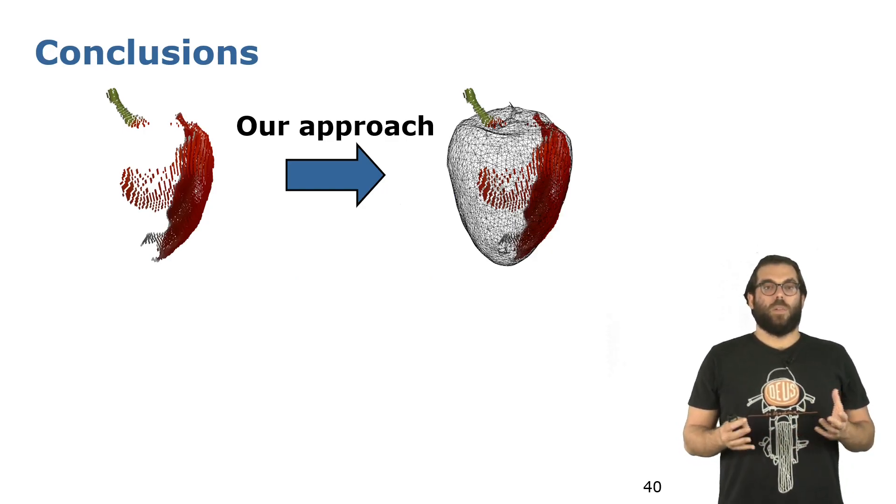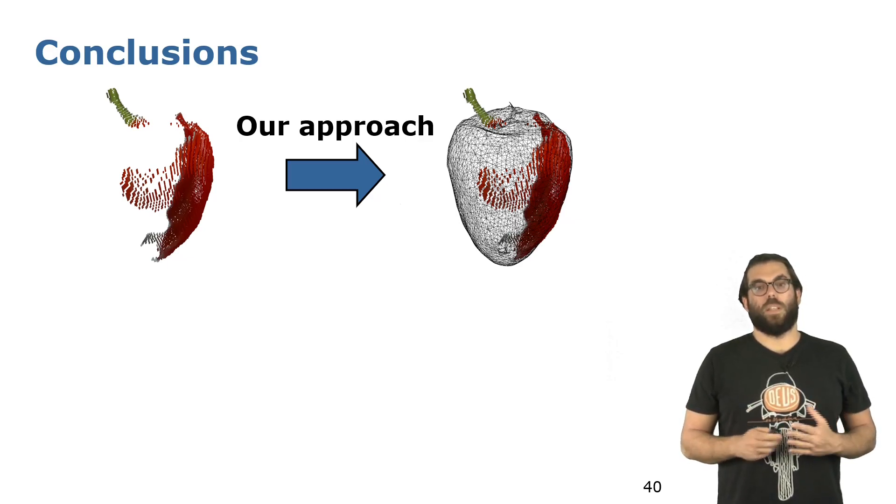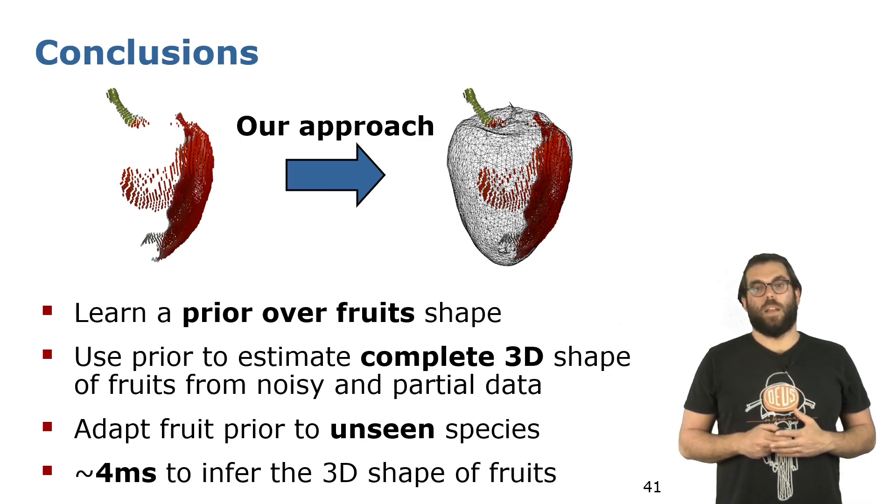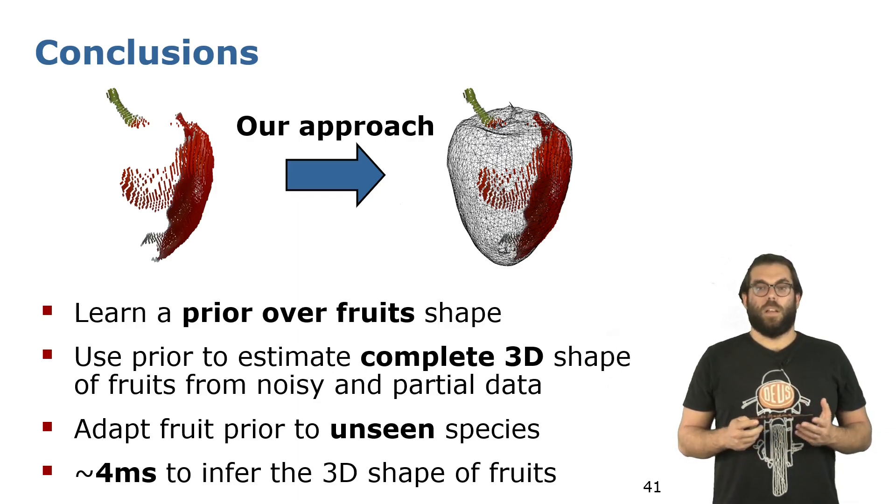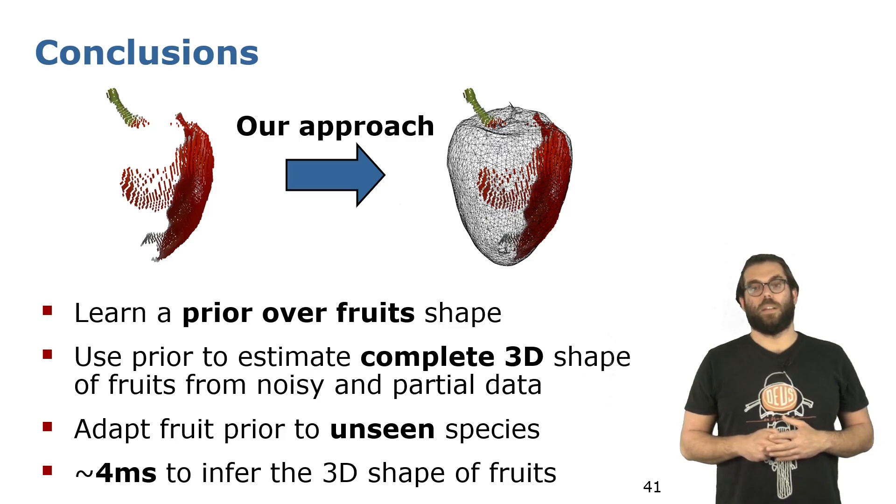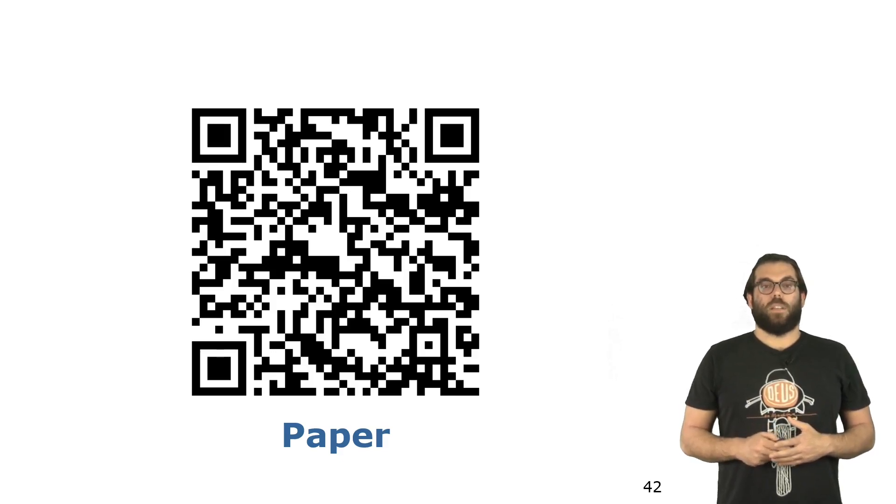Now to conclude, I hope that I showed you how we can turn a partial RGBD frame into a complete 3D model. I showed you how we can learn prior over fruits leveraging high precision point clouds, and how we can use this prior knowledge to complete noisy and partial input. I've shown you how we can adapt prior knowledge coming from different species, and that our approach can work online, given that it takes only 4 milliseconds to complete a partial scan. That was all for my side. Thank you for your attention. If you want to dive deep into our paper, scan this QR code.